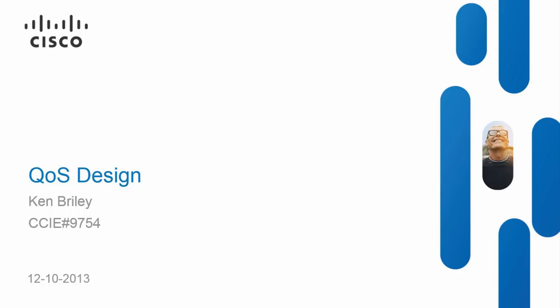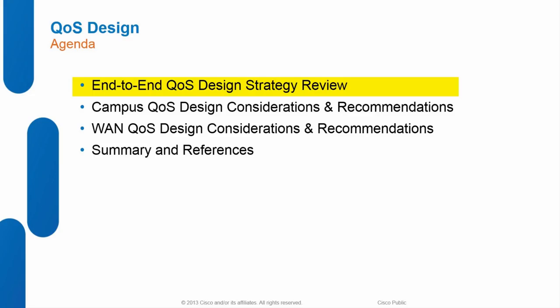We're going to focus on end-to-end QoS design and strategy. We'll start with a basic overview, then convince you that you need to deploy campus QoS, because that's usually the sticking point. Most customers think of QoS in terms of the WAN, and that's where they go first. We'll cover campus first, then WAN, then wrap up with a summary and Q&A.